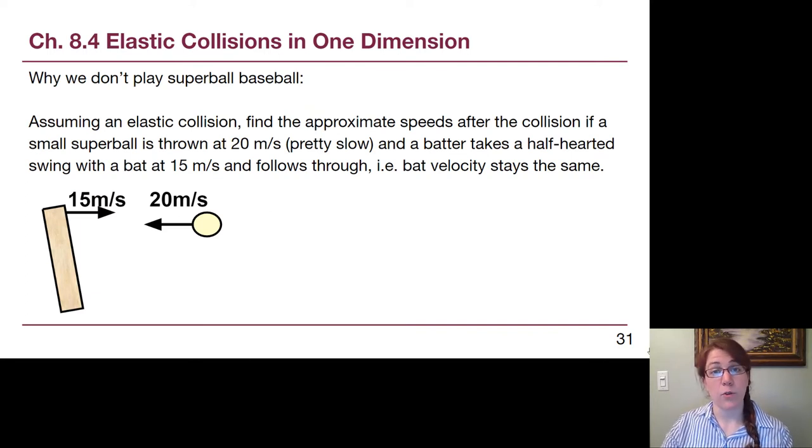So let's think about that then for baseball. Baseballs are not known to be particularly bouncy. If we assume that we have a perfectly bouncy, rubbery Super Bowl baseball, we want to think about what those kinds of situations would look like. So we've gone to our baseball game and maybe it's the eighth or ninth inning and everyone's kind of tired. The baseball is thrown at 20 meters per second. That's about 45 miles an hour. I could probably throw that fast. It's pretty slow for major league pitchers. And the batter doesn't try all that hard and he swings with 15 meters per second at the baseball.